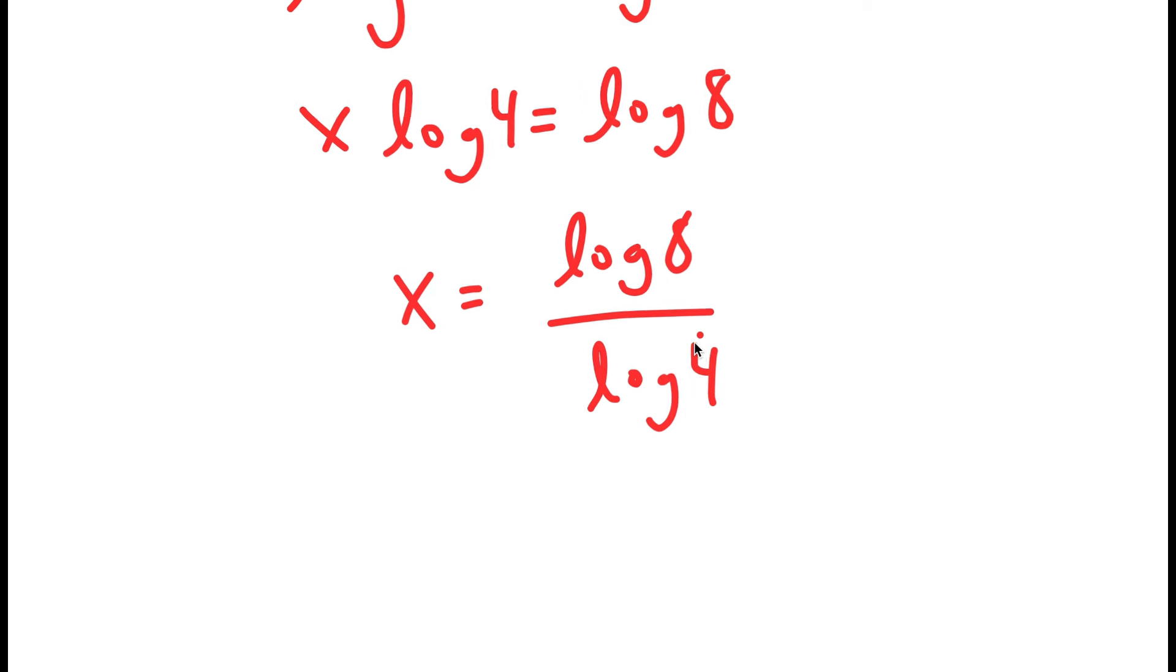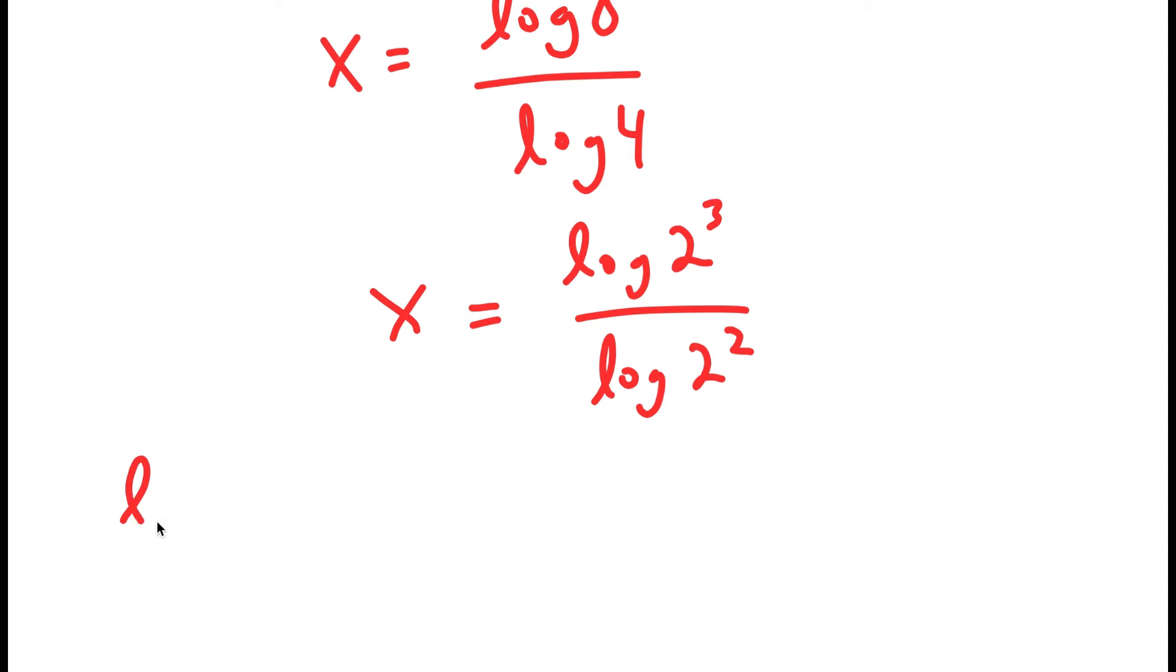And now from here, log 8 is the same thing as log 2 to the power of 3, log 4 is the same thing as log 2 squared. And now an important property of logarithms is that log a to the power of b is equal to b times log a, meaning I can move my exponent to the front.